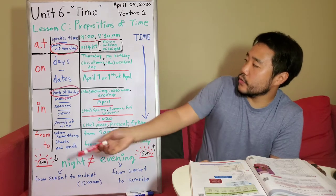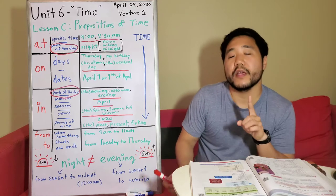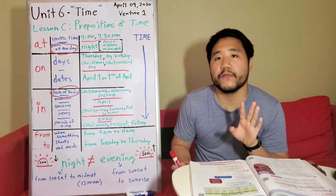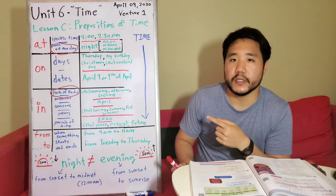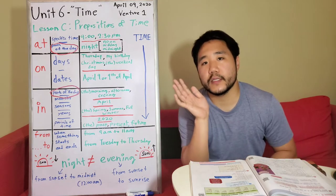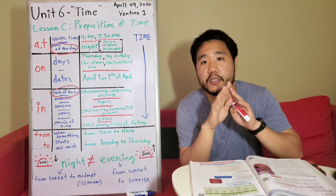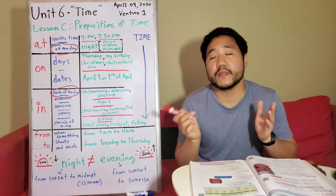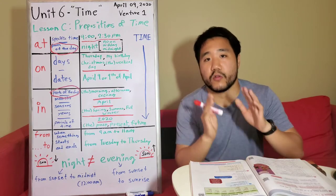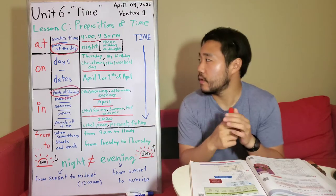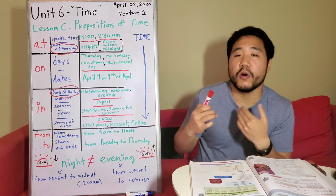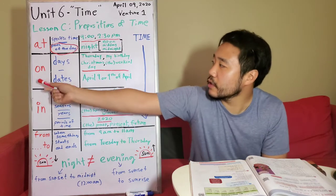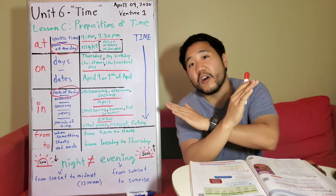One thing I want to mention is that here we have "Christmas day." I hope you don't get confused using "on" for Christmas. Christmas day and Christmas are different. Christmas day is one day. But Christmas is more than one, because we have Christmas day and Christmas Eve. So if we want to talk about one part of Christmas, we say "on Christmas day," not "on Christmas."